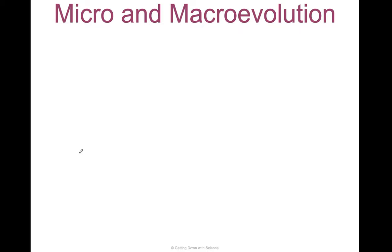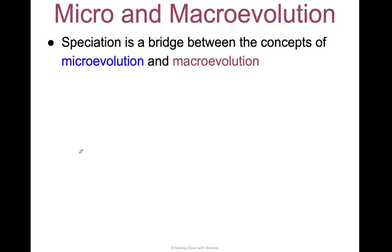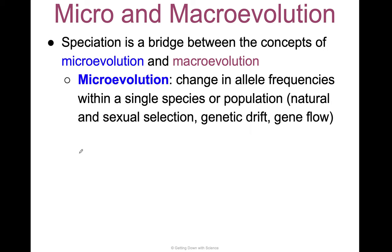Let's talk micro and macro evolution — speciation is a bridge between these two concepts. Microevolution is a change in allele frequencies within a single species or population: things like natural and sexual selection, genetic drift, gene flow — pretty much passing genes from one population to the next.